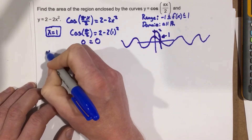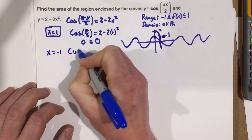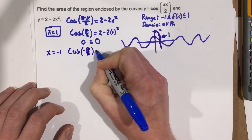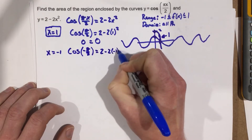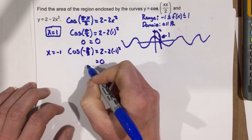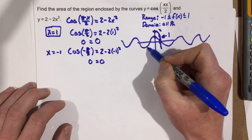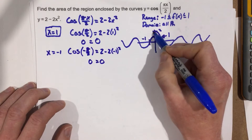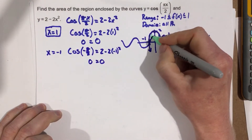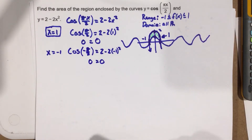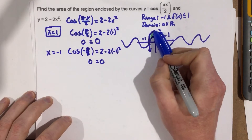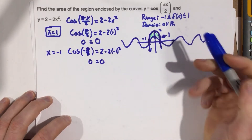Let's check x equals negative 1. We get cosine of negative pi over 2 equal to 2 minus 2 times negative 1 squared. That gives 0 equals 2 minus 2, so that's 0. Cosine of negative pi over 2 is also 0. So we know negative 1 is also a solution. When x is 0, the parabola is at 2 and cosine is at 1, confirming what the two graphs look like.